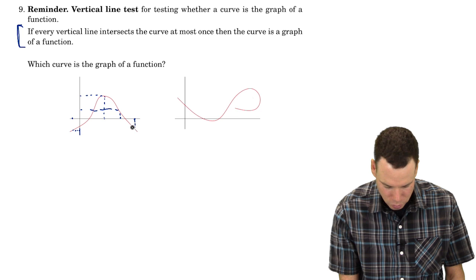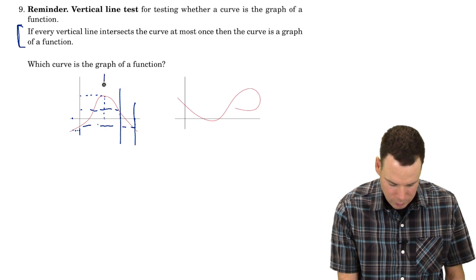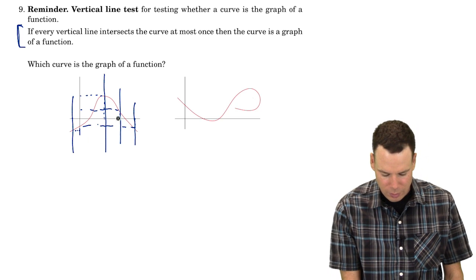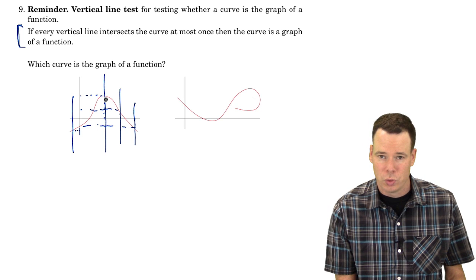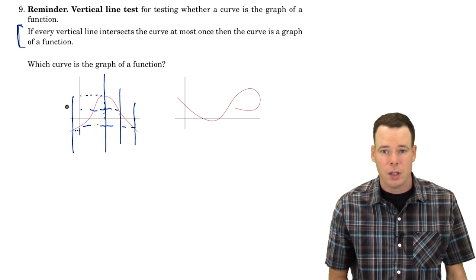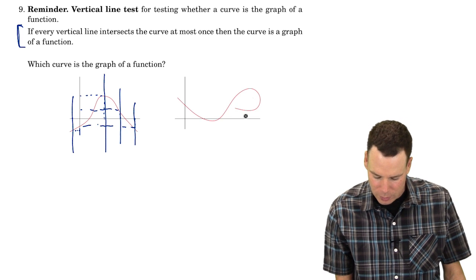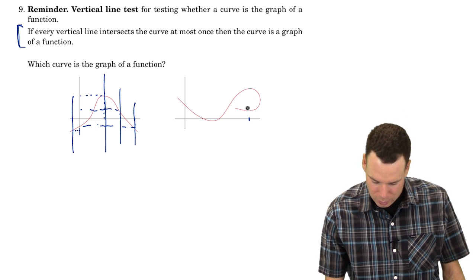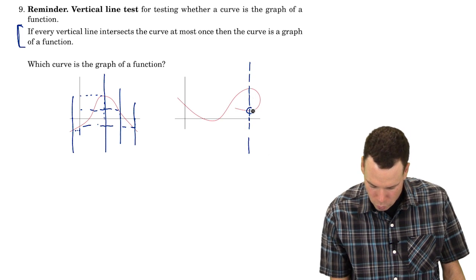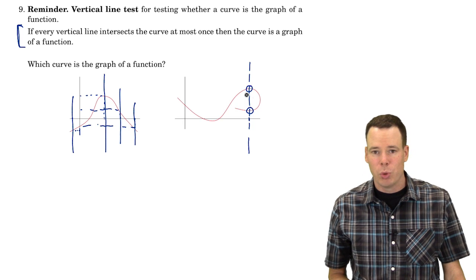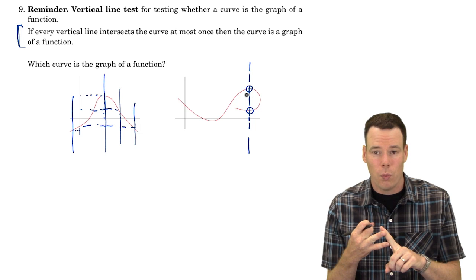So no matter where I take an input, if the vertical line that I draw through that input on the horizontal axes hits the graph at most one spot, then there's a corresponding output. So I've got no problem, it's the function that's defined there. However, if I've got a situation where I take an input, I draw a vertical line through that input, and I see, oh no, it hits this curve at two points. Then I'm in trouble, because a function's got to take an input and give you one output.